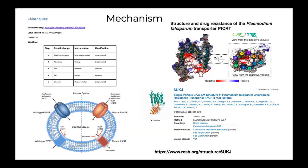The mutant PFCRT molecules have acquired the ability to expel chloroquine out of the digestive vacuole. All CQR haplotypes carry the key K76T mutation. In the structure's cavity, this mutation removes the positive charge in the transmembrane helix, suggesting a charge-dependent transport mechanism for chloroquine, which is diprotonated in the acidic environment. The K76T mutation is always accompanied by additional mutations that may increase the CQR level or the fitness cost of resistance.